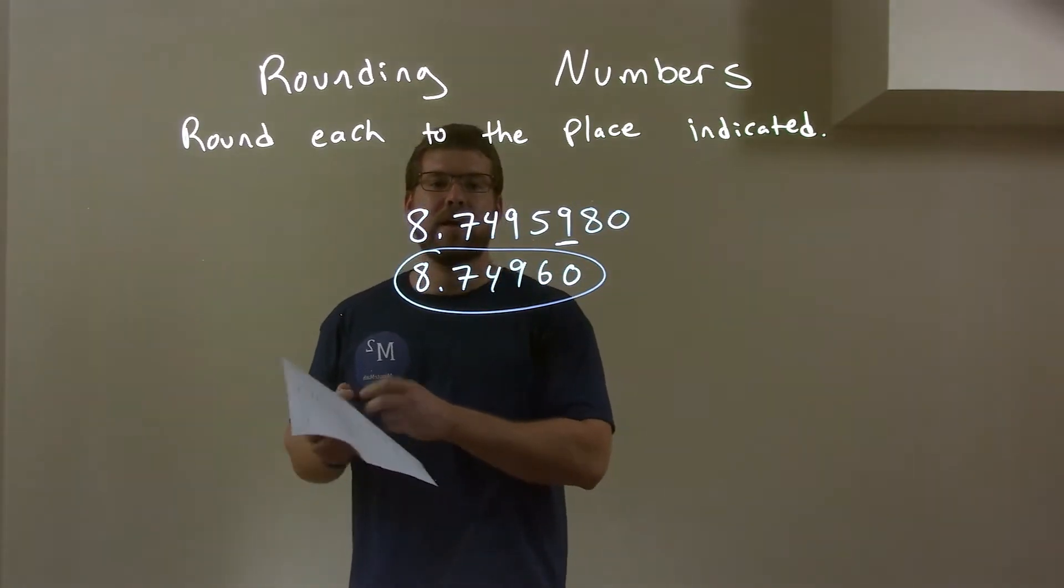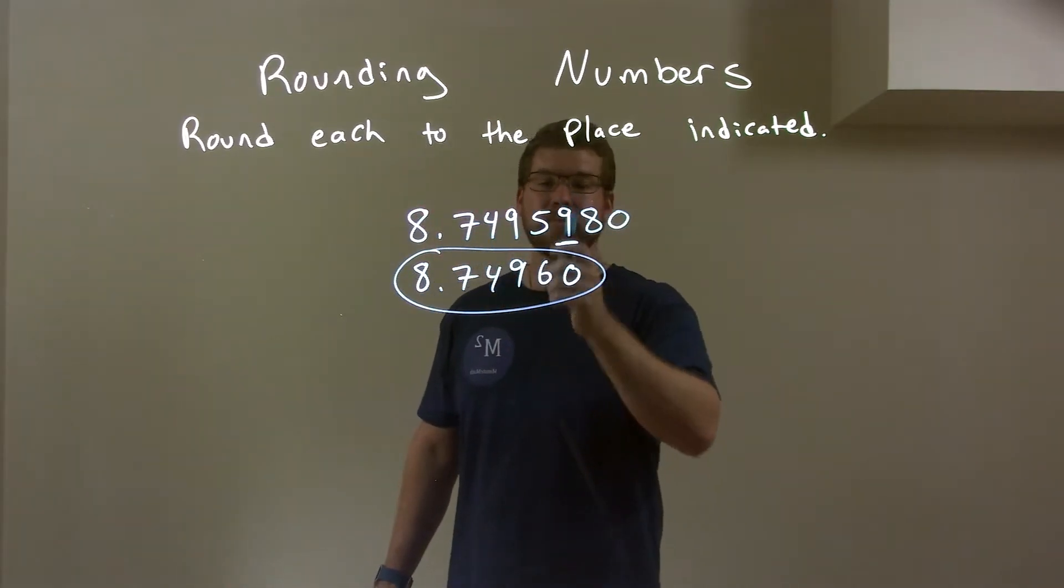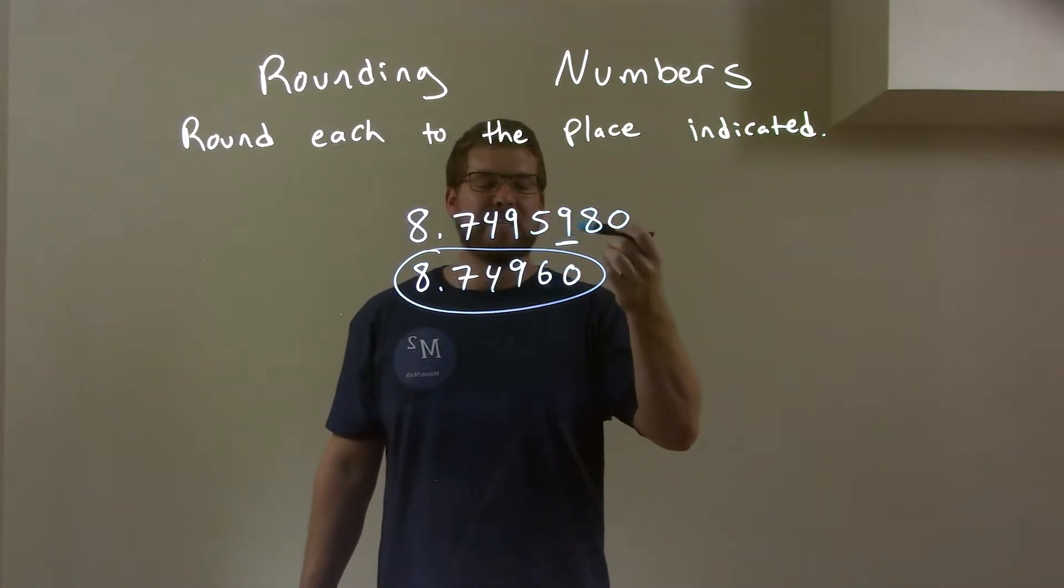So quick recap. We're given 8.7495980 and we're rounding on this 9. We look to the right. 8 causes the 9 to round up to a 10.